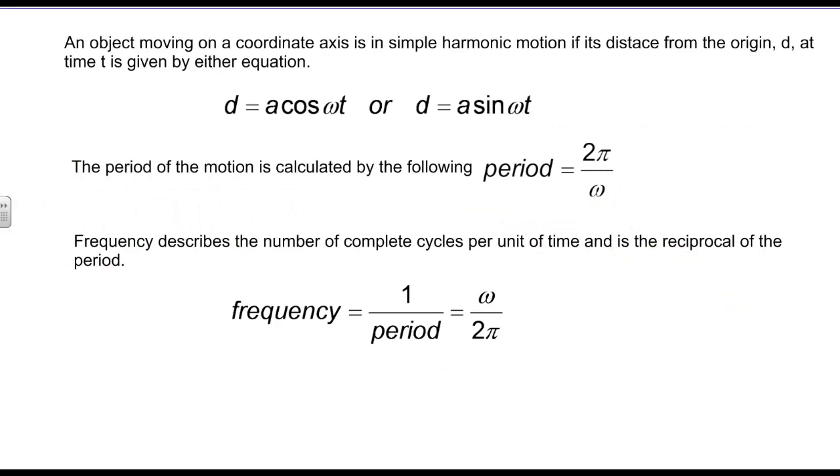Now, another little concept is the equation of these type of graphs, and they can either be in sine and cosine fashion. Now, this is the equation the book gives, and they use this variable right here, omega, so d equals A cosine omega t, or d equals A sine omega t, to describe the oscillation motion or the simple harmonic motion. This really functions just like the k we used in our previous example, so we can use k, we can use omega, it really doesn't matter.